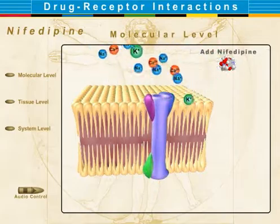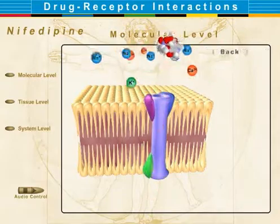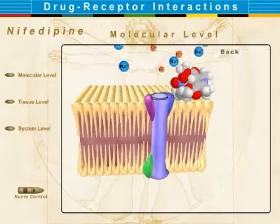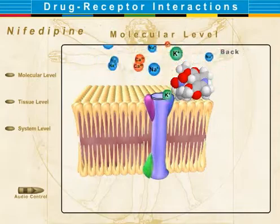When nifedipine is added, it blocks the calcium channels, lowering intracellular calcium, and this results in smooth muscle relaxation and a resulting vasodilation.